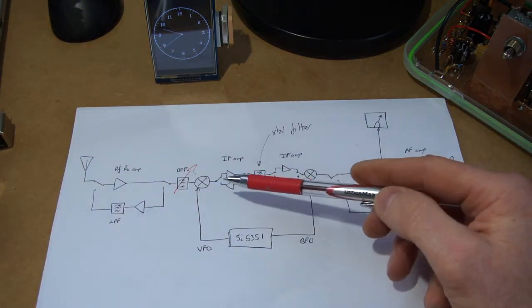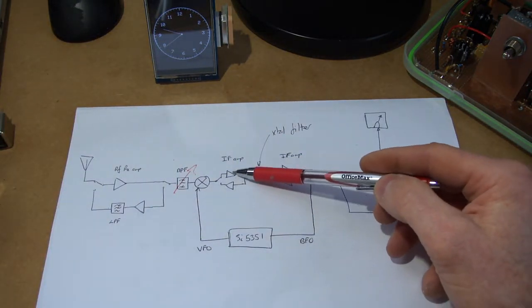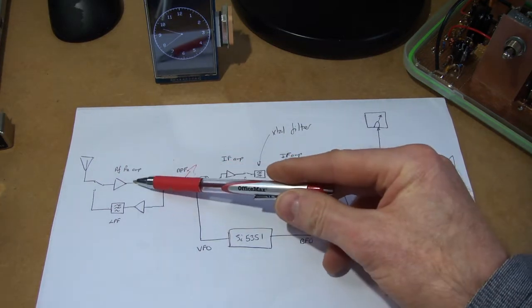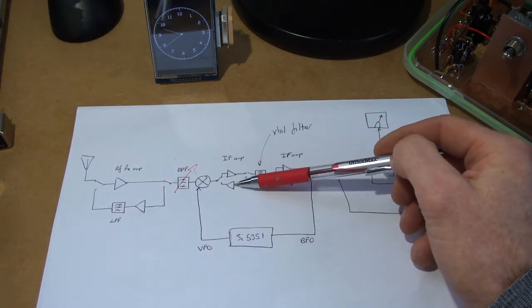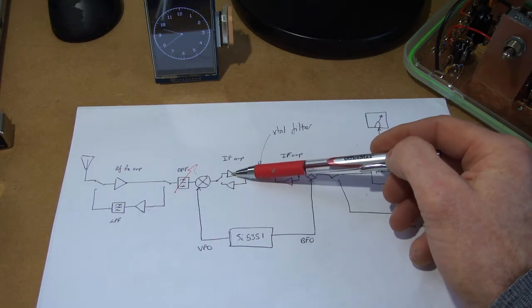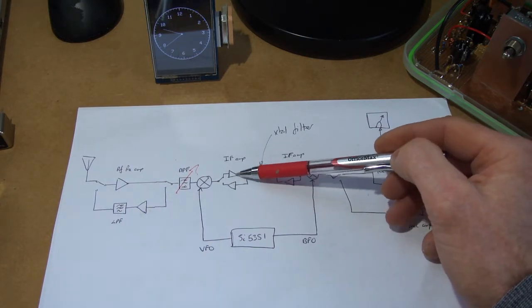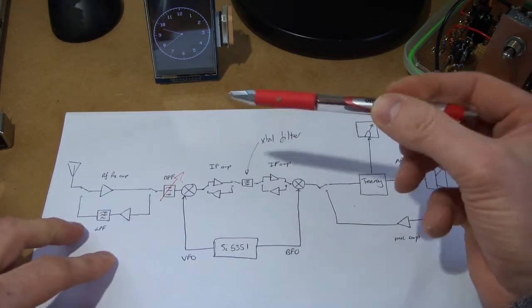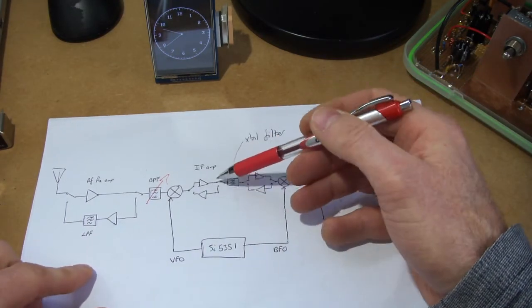Again, IF amps—it'll be a similar arrangement to the RF amp coming in, probably 3904s again, but they'll be fixed at the IF frequency so we can make those narrowband. We'll see how that one pans out.